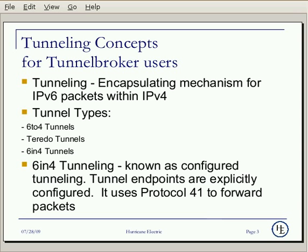6in4 and Teredo are good examples of IPv6 automatic tunneling. 6in4, the one TunnelBroker.net uses, is known as configured tunneling. A 6in4 tunnel requires explicit configuration on both client and server sides. That tunnel uses protocol 41 to encapsulate IPv6 information in IPv4 packets.